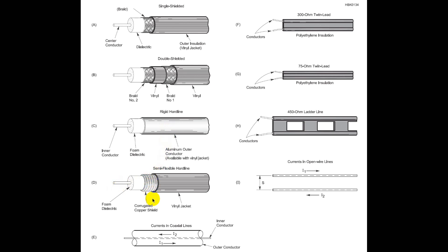Here is something called semi-flexible hard line. This actually is a corrugated copper shield that's wound on here. And these can get physically very big, up to an inch in diameter, sometimes even more.